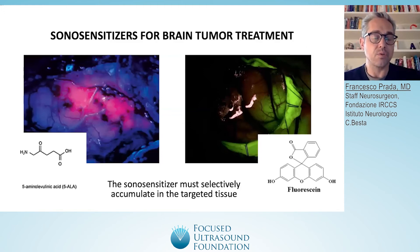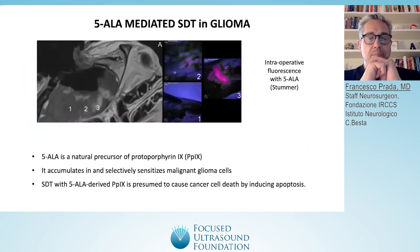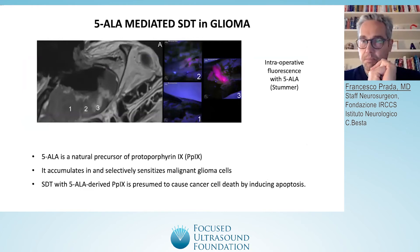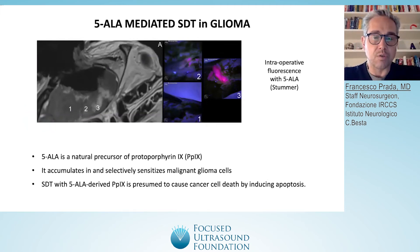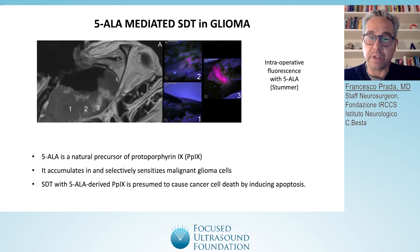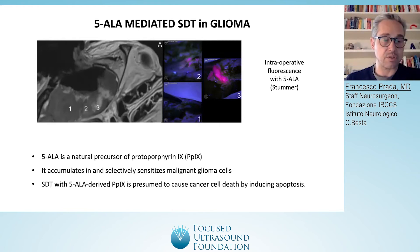They have two different mechanisms. 5-ALA is a protoporphyrin precursor. It is taken up selectively by glioblastoma cells because they have a higher metabolism. It is turned into protoporphyrin IX, and as you can see, when we use a certain wavelength, we can highlight only the tumor tissue under the microscope, and this can guide the surgery.